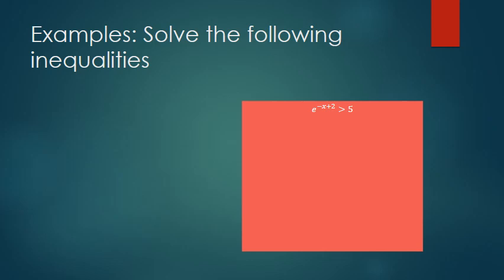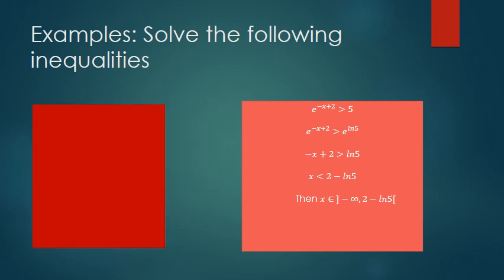Example: e^(-x+2) > 5. On the right-hand side we don't have an exponential, so we must write 5 in terms of an exponential: 5 = e^(ln 5). Then -x + 2 > ln 5, so x < 2 - ln 5. The solution is from minus infinity to 2 - ln 5.